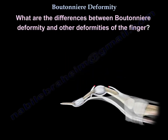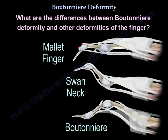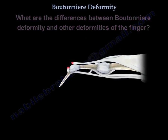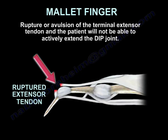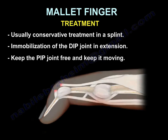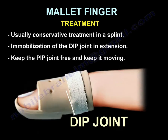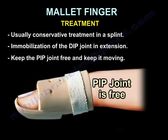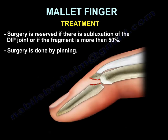What are the differences between Boutonniere deformity and other deformities of the finger — the mallet finger and the swan neck deformity? In the mallet finger, there will be a rupture or avulsion of the terminal extensor tendon, and the patient will not be able to actively extend the DIP joint. Treatment is usually conservative — a splint immobilizing the DIP joint in extension, keeping the PIP joint free and moving. Surgery is reserved for subluxation of the DIP joint or if the bony fragment is more than 50%.